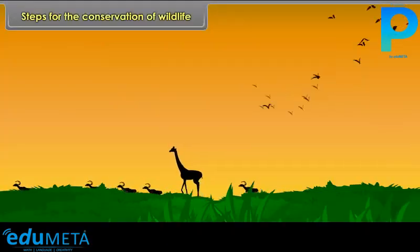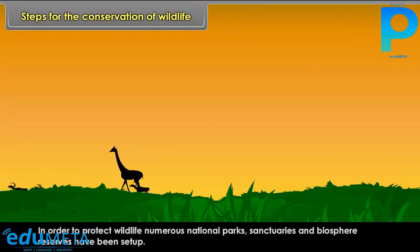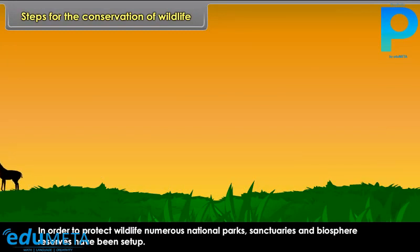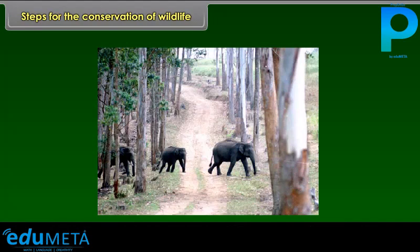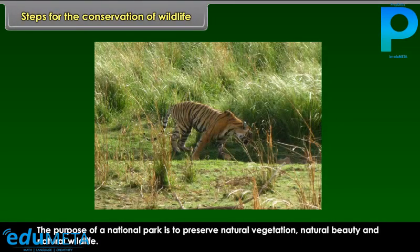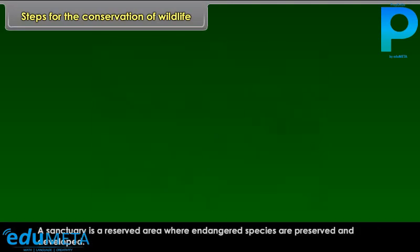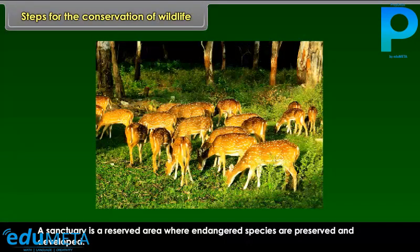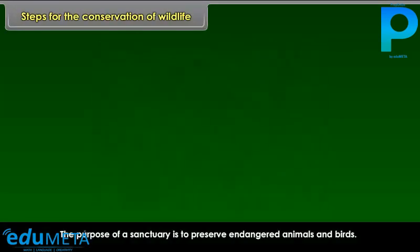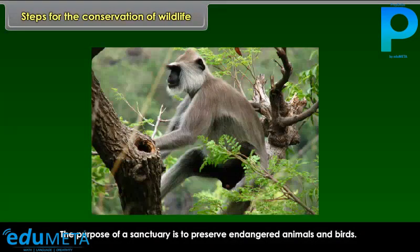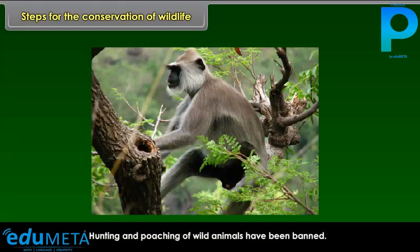In order to protect wildlife, numerous national parks, sanctuaries, and biosphere reserves have been set up. A national park is a reserved area where wildlife is preserved in its natural setting, with the purpose of preserving natural vegetation, natural beauty, and natural wildlife. A sanctuary is a reserved area where endangered species are preserved and developed. Hunting and poaching of wild animals have been banned.